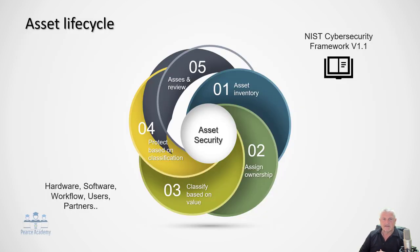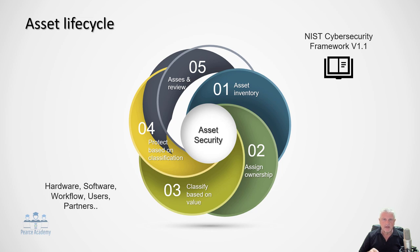First, we'll look at the asset lifecycle. The first step is asset inventory. Although it's not a formal guide within this asset domain, the NIST Cybersecurity Framework, currently at version 1.1, is highly recommended — the first step is to identify all your assets. Then we assign ownership to all identified assets. After that, we classify based on value — which can range from market exposure to black market value. Once we know the classification, we protect the data accordingly, and the final step is to assess and review, ensuring appropriate protection and checking for any unauthorized access.